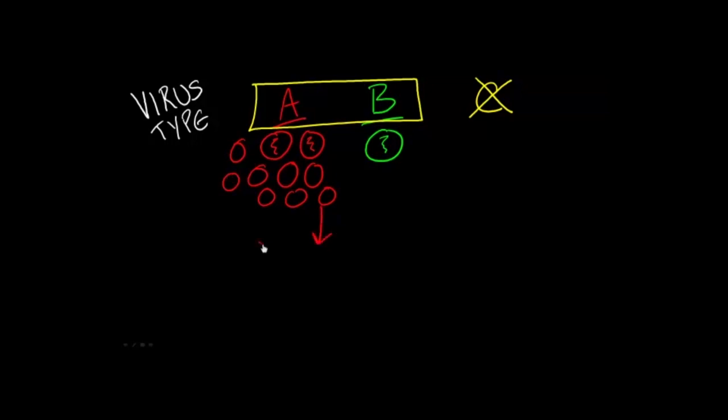And the subtype is named according to surface proteins that are on the outside of every virus. So there are two kinds of surface proteins on every influenza A virus. And we call these H for hemagglutinin and N for neuraminidase.